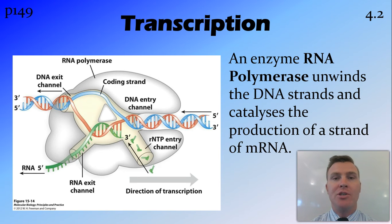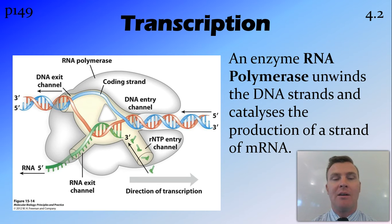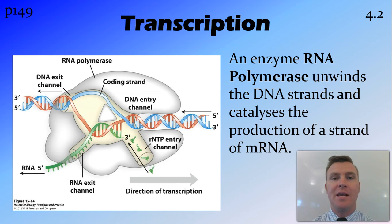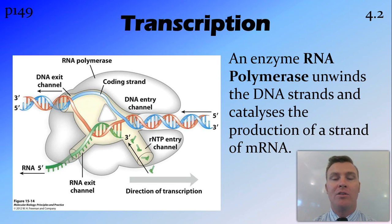It then produces a strand of mRNA — messenger RNA — and keeps on producing that strand until it gets to the stop codon, which is a sequence of base pairs that tells the RNA polymerase where to stop transcribing that DNA into the mRNA.